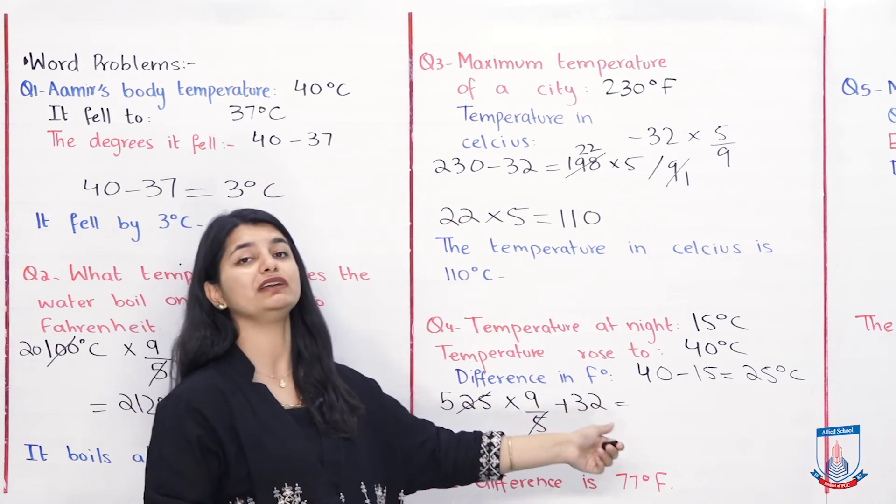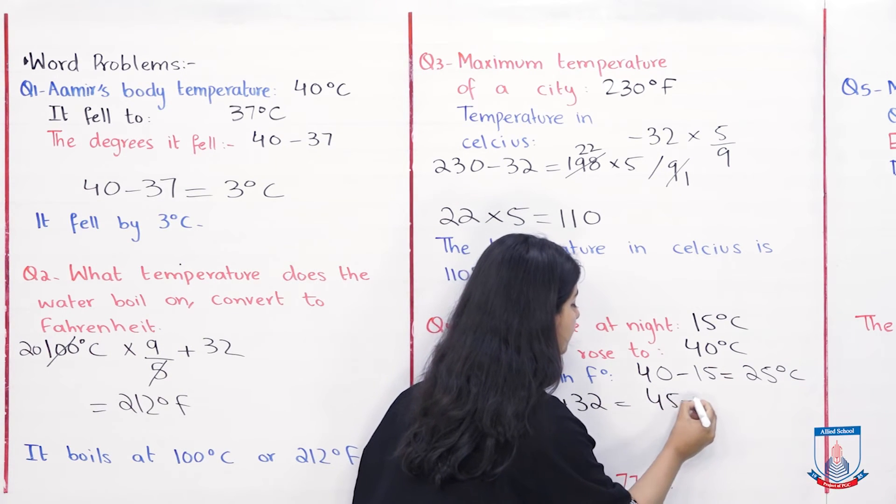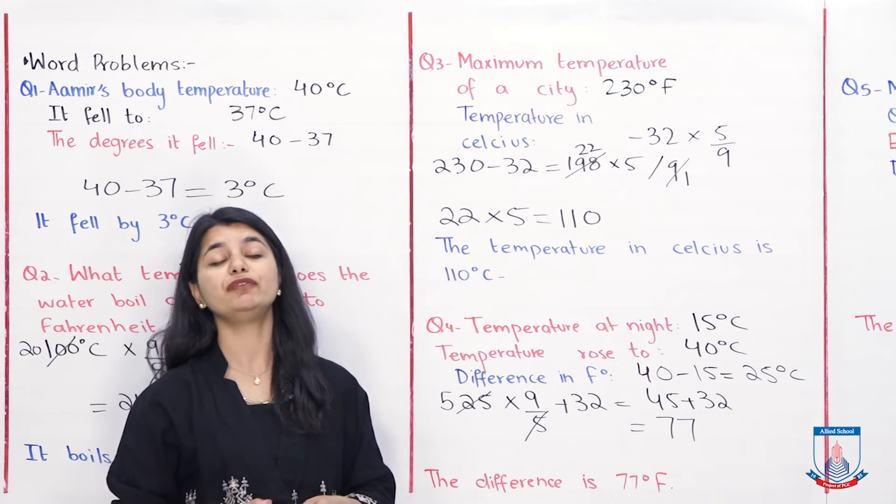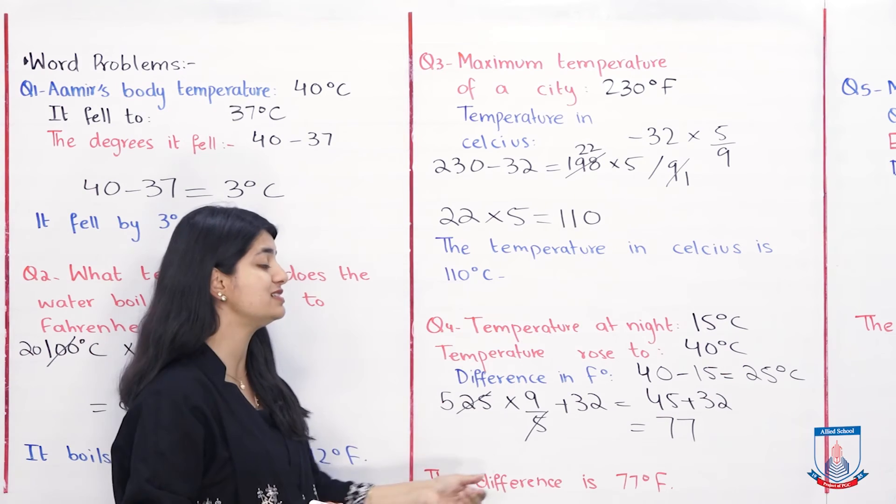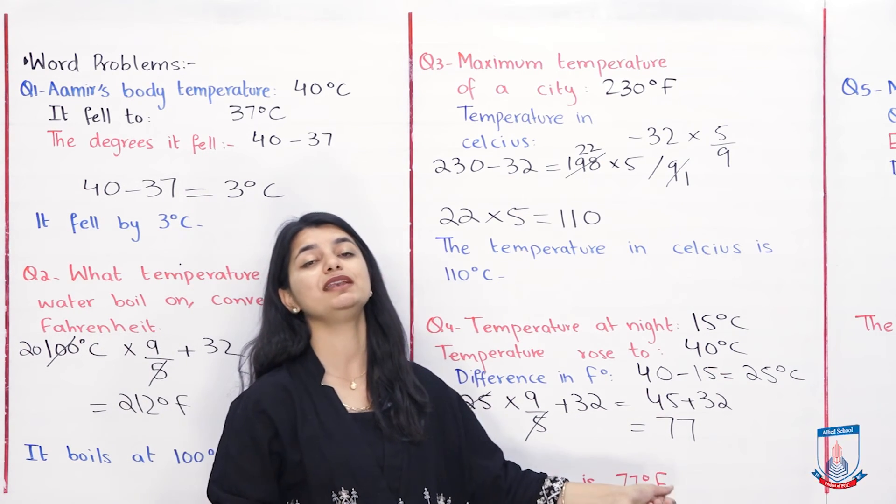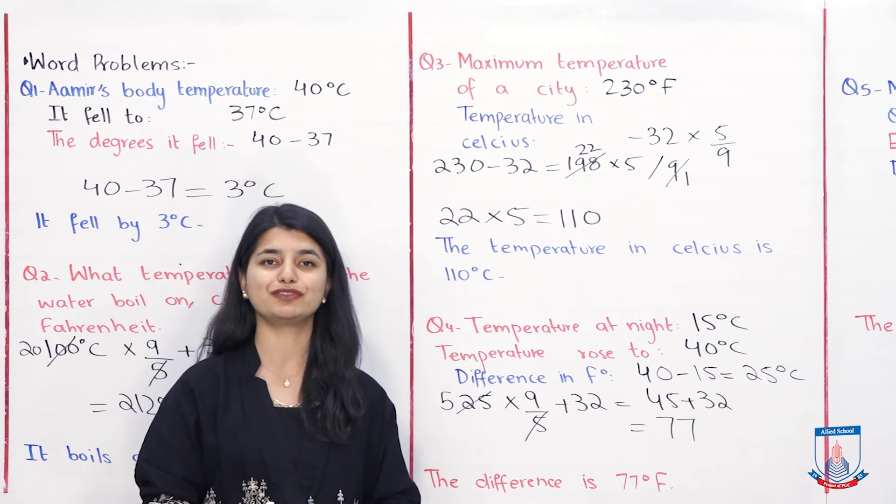45 plus 32 equals 77. So the difference is 77 degree Fahrenheit. You have also solved question number 4.